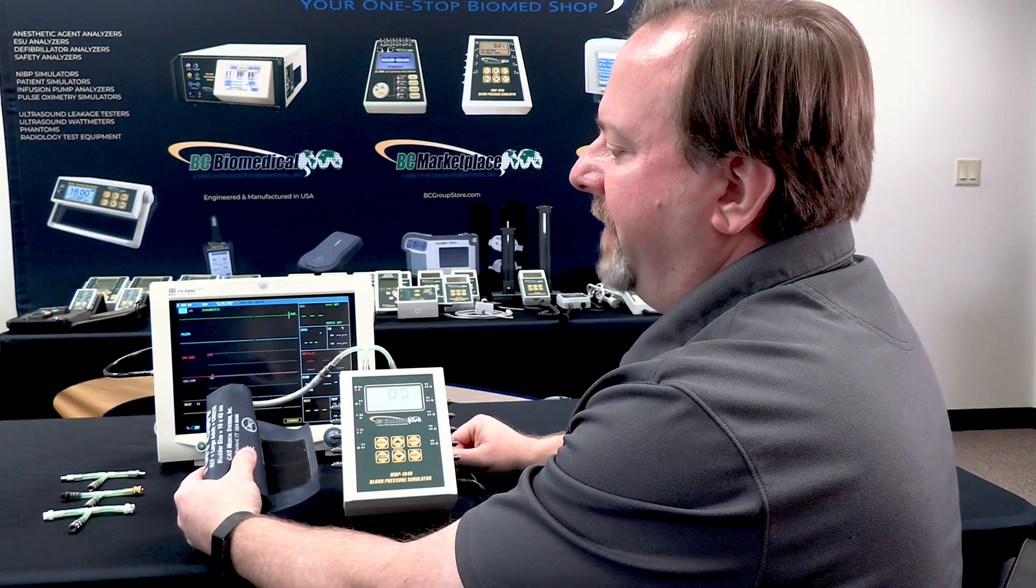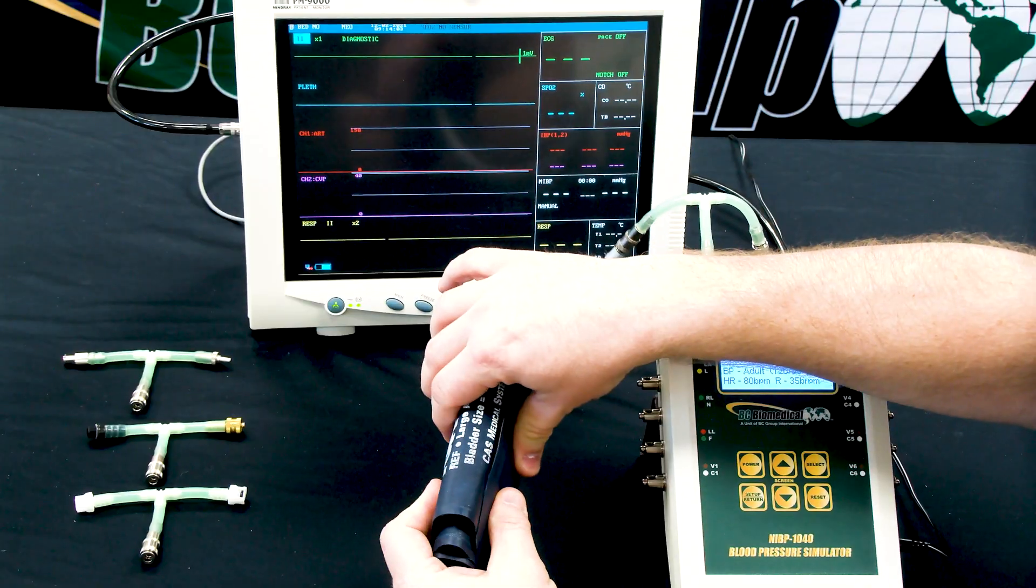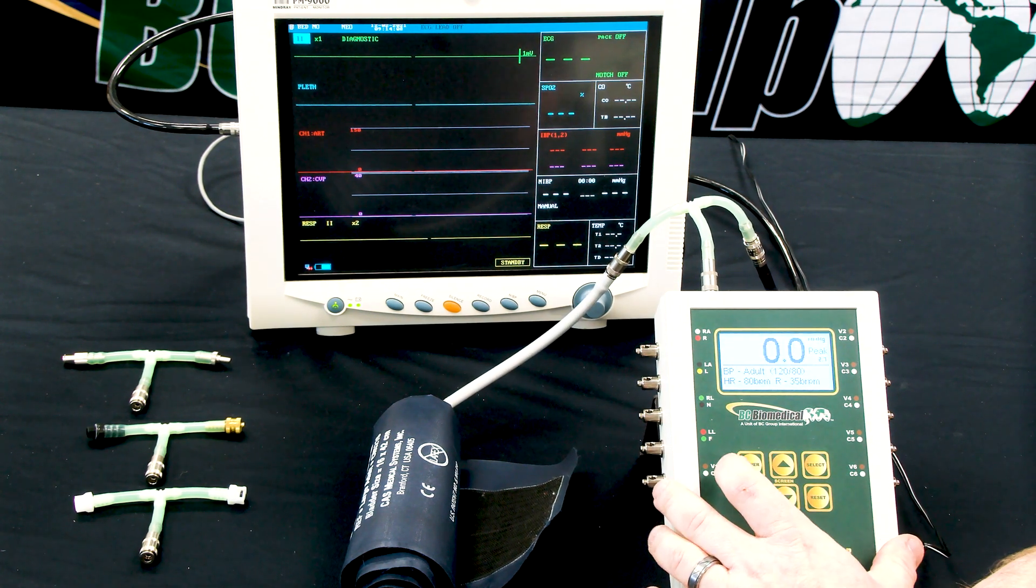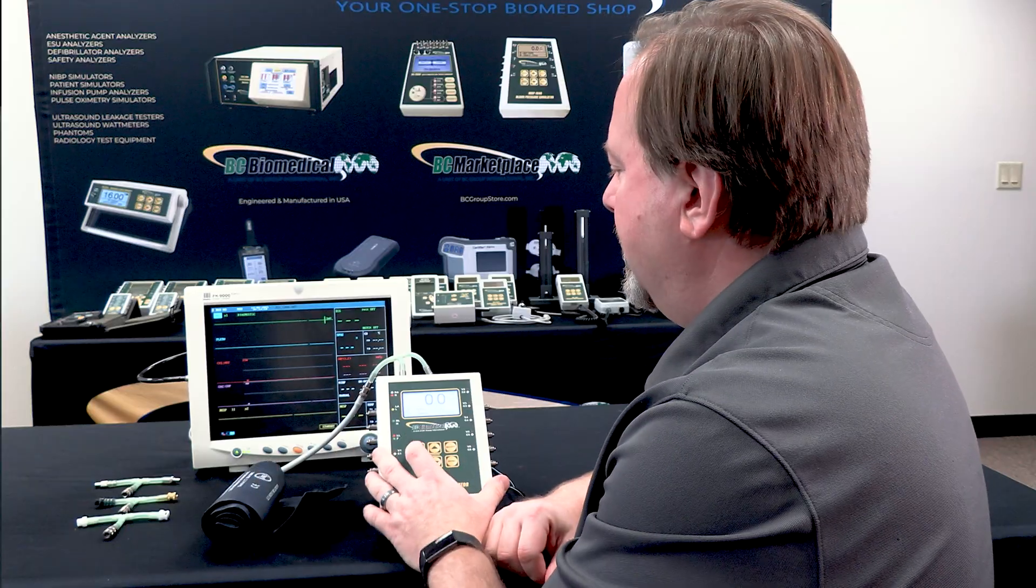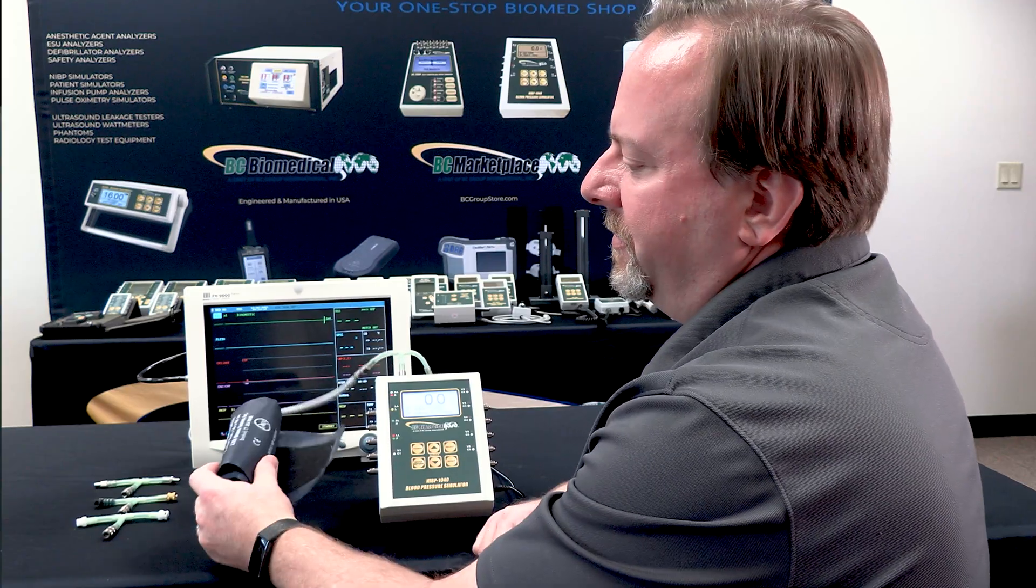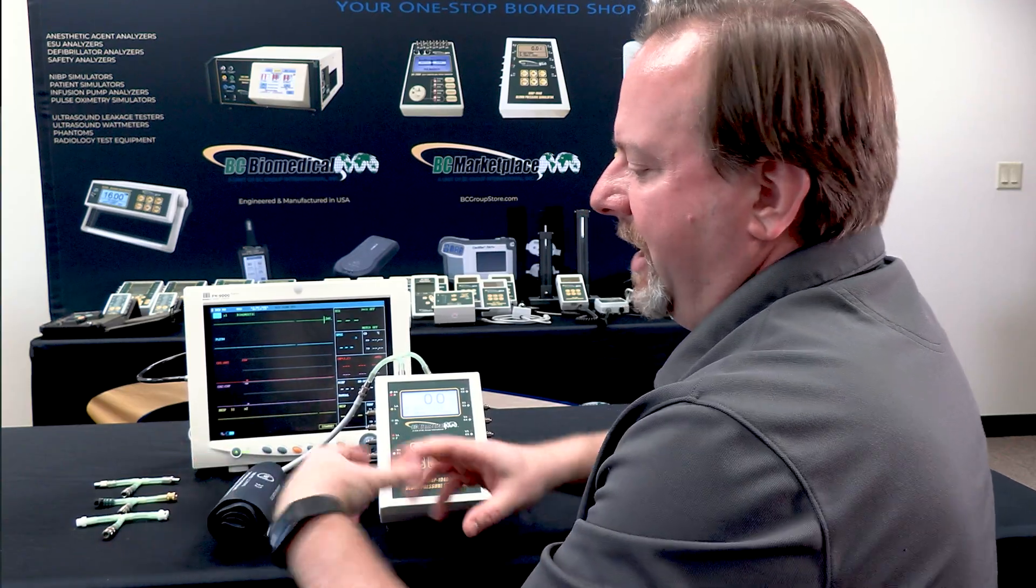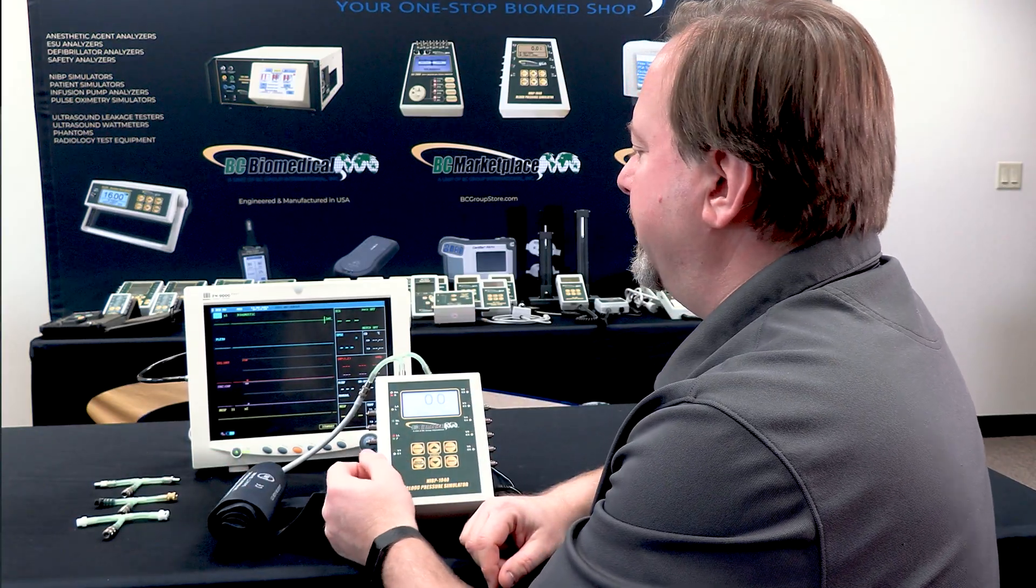It's important that the cuff be wrapped tightly, either around itself or around a firm cylinder, either a water bottle or something of that size that will reduce the volume inside the cuff. If we just leave it unrolled, it'll have too much volume and the monitor won't get a good signal.